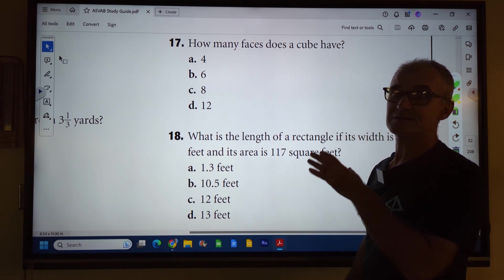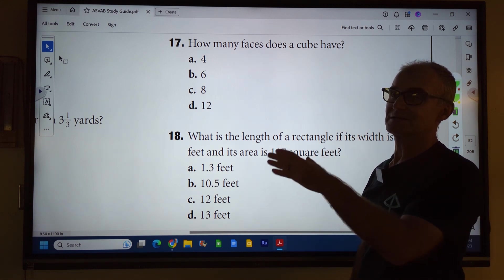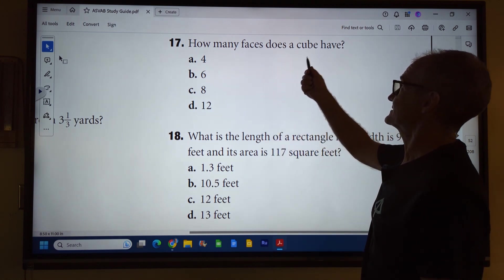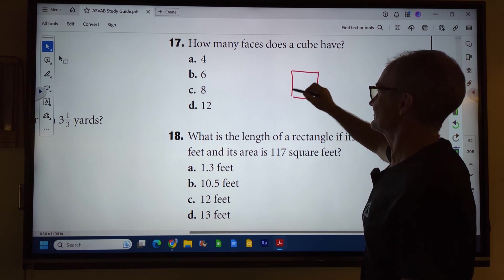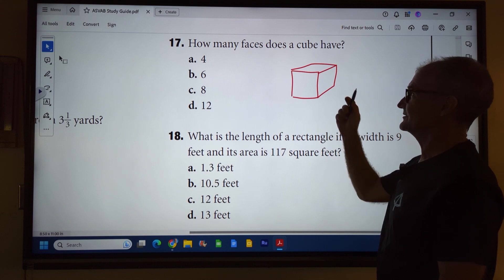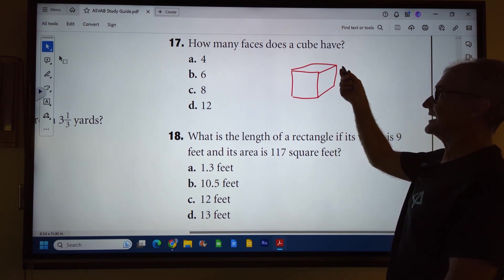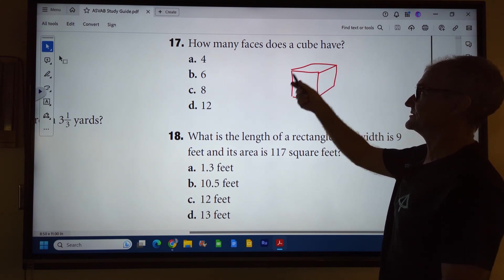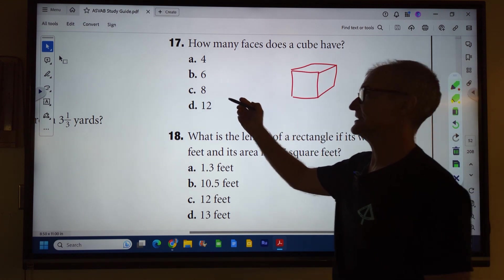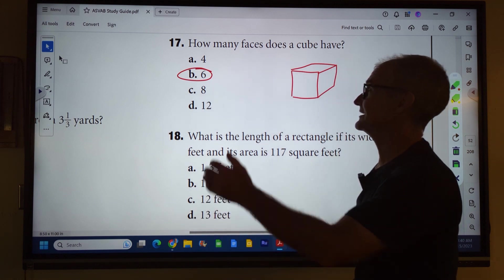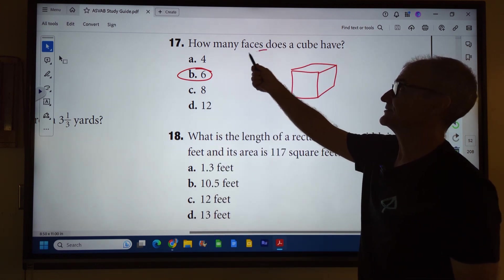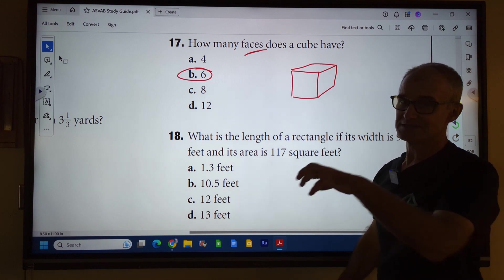I'd pause the video here. Do problem 17, unpause the video and watch how I solve it. How many faces does a cube have? It's a little bit of a tricky problem, right, because you're asking for faces. So it would have one, two, the back, three, four, four sides, a top and a bottom. So that would be six faces. So if it asks for sides, it would only be the four sides. But it's asking for faces. So it's all six, just like a die.